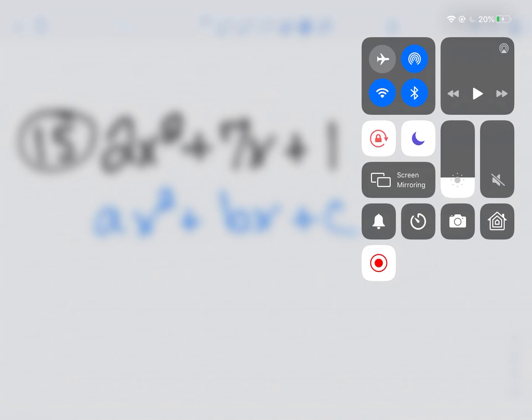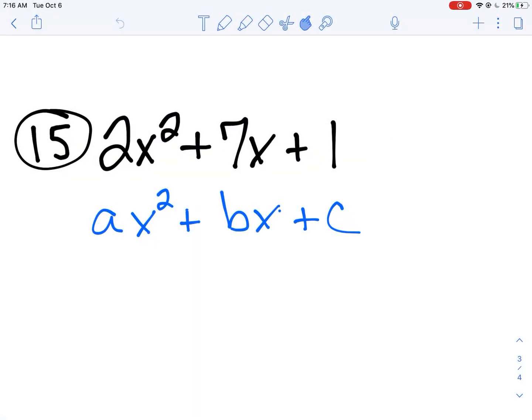Okay, we're going to be going over number 15, because number 15 is an interesting example. Alright, so we've got ax squared plus bx plus c. I always like to start out with that.